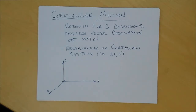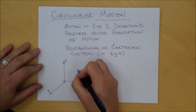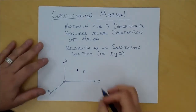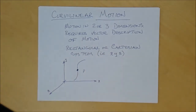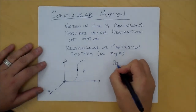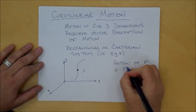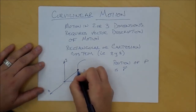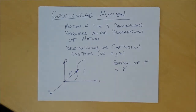Here's our Cartesian coordinate system according to the right-hand rule. Suppose we have a particle P moving along some path in three-dimensional space. The position of particle P is the vector R, which has its root at the origin of the coordinate system and follows a line up to the particle. That's the position vector R in three-dimensional space.